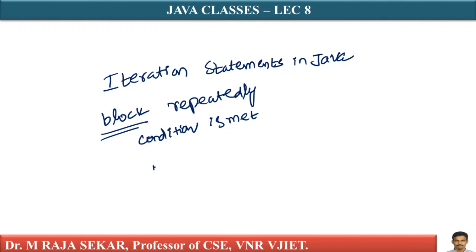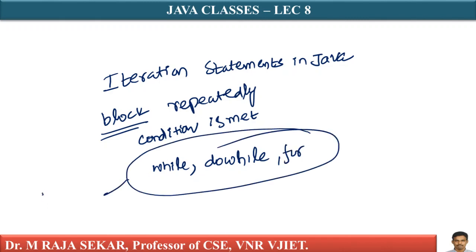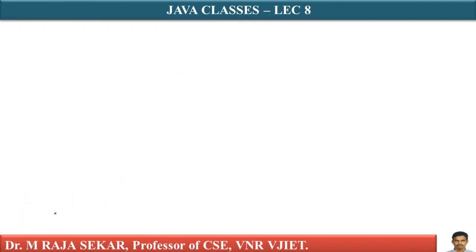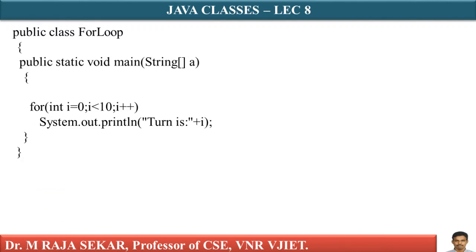These are known as iteration statements, or one can call these as loops. They are just similar to C or C++ programming language. This iteration statement executes in a loop a number of times as long as the termination condition is not reached. We will try to understand them one by one.